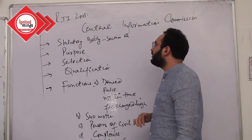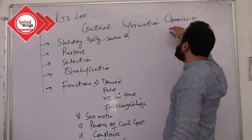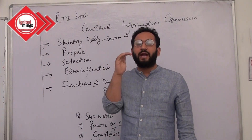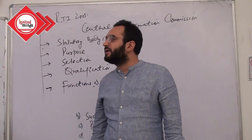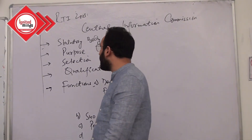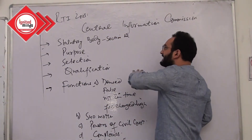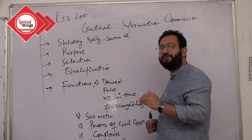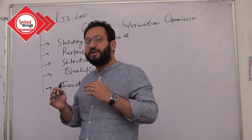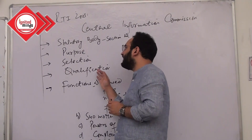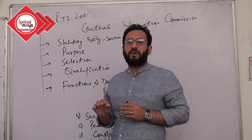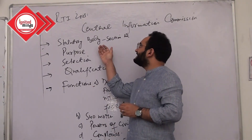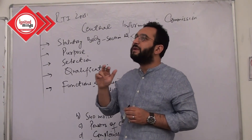In this particular video we shall be discussing something called the Central Information Commission — the nodal authority at the central/national level which is supposed to oversee the working of the Right to Information Act 2005. We shall be discussing the structure, the function, and the purpose of the Central Information Commission, and what role this commission plays in making RTI successful in India.